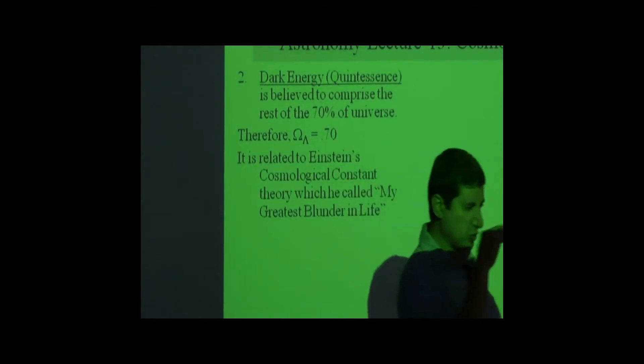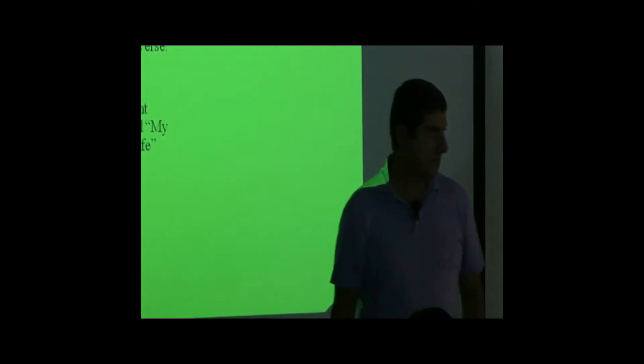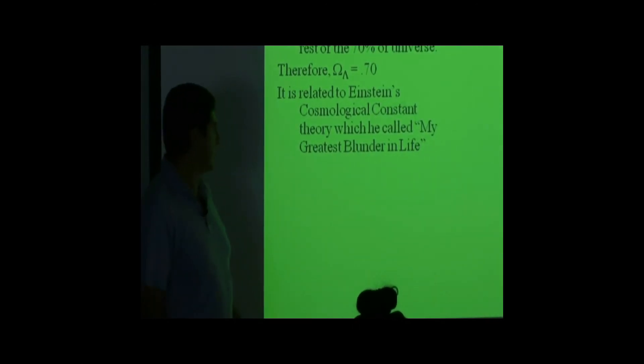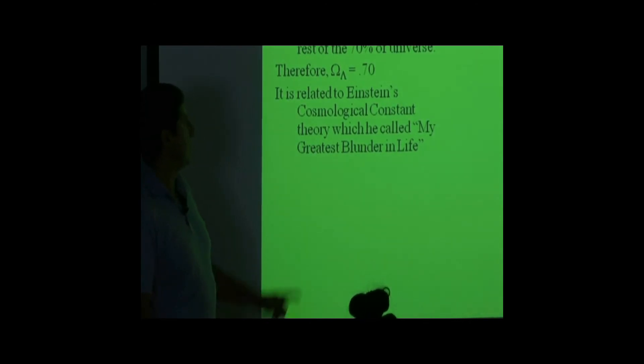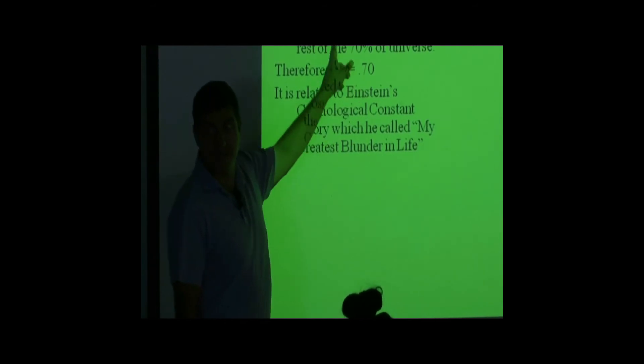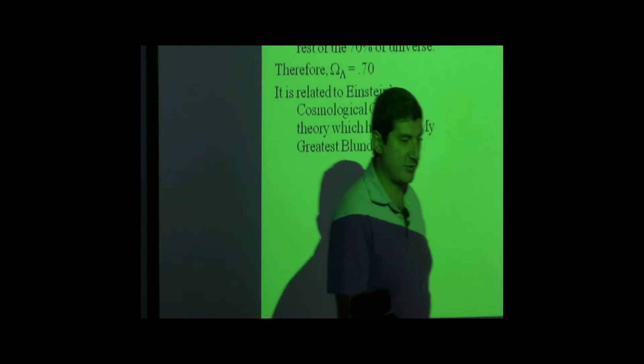When Einstein, towards the end of his life, he was working on a unified model of the universe. He came up with a concept of the cosmological constant. He said, this cosmological constant pushes galaxies away from each other. Then he took it back. He said, it's the greatest blunder in my life. I don't believe in such a thing. This cosmological constant and dark energy are related. They do the same function. So if he ever knew that we came back and accepted his theory, he would roll over in his grave.